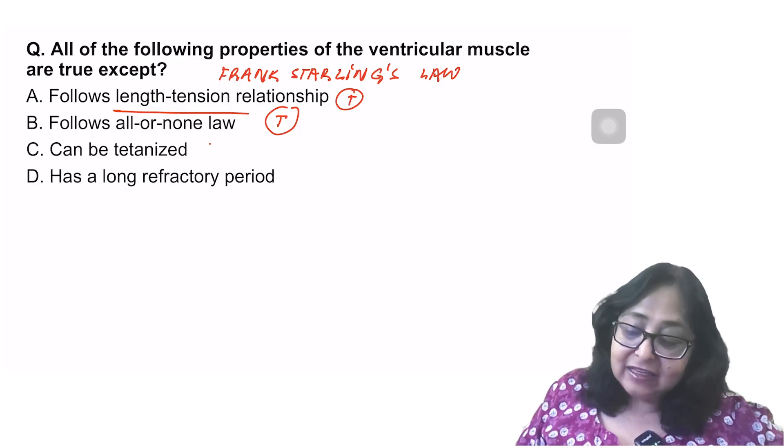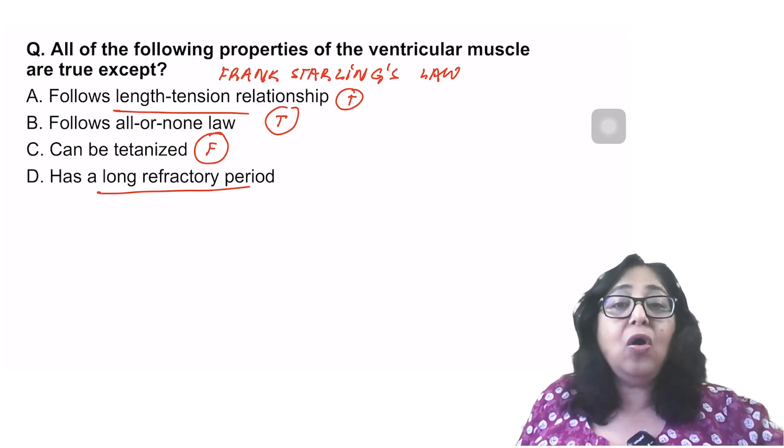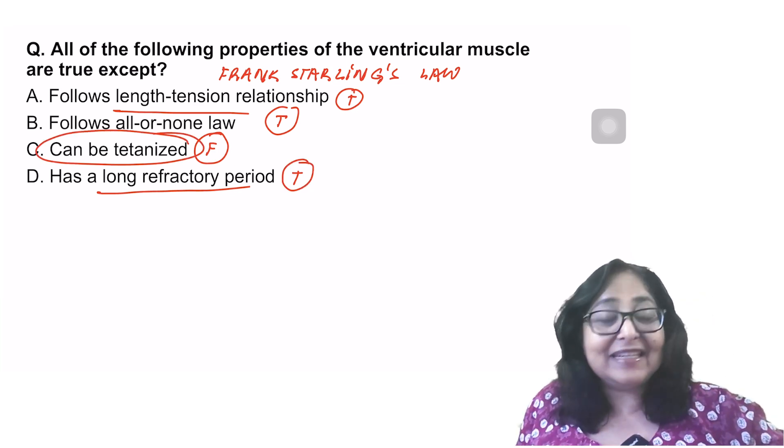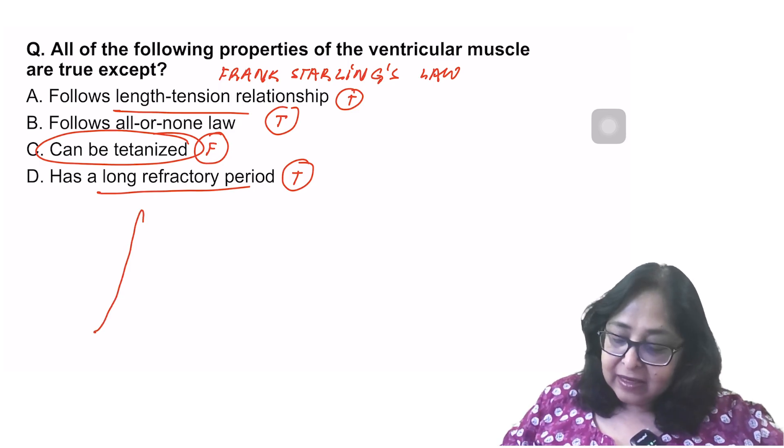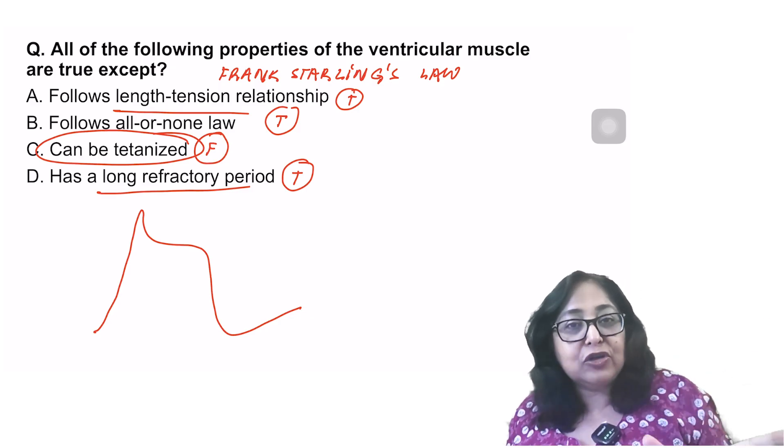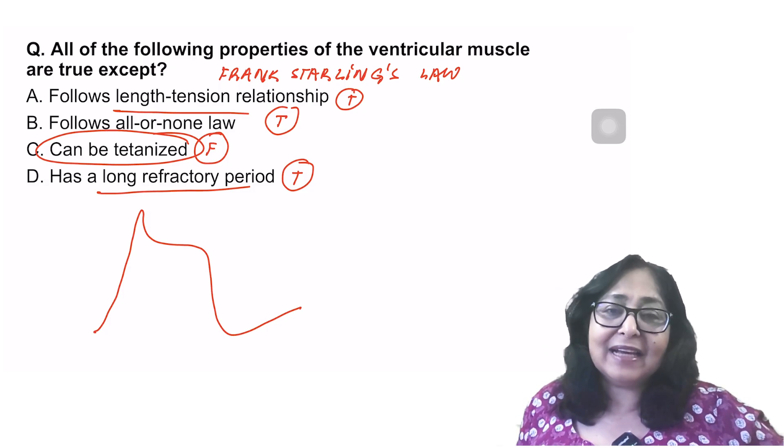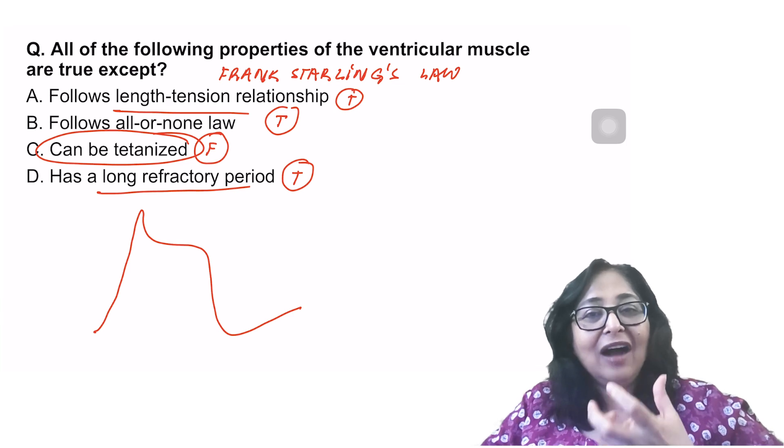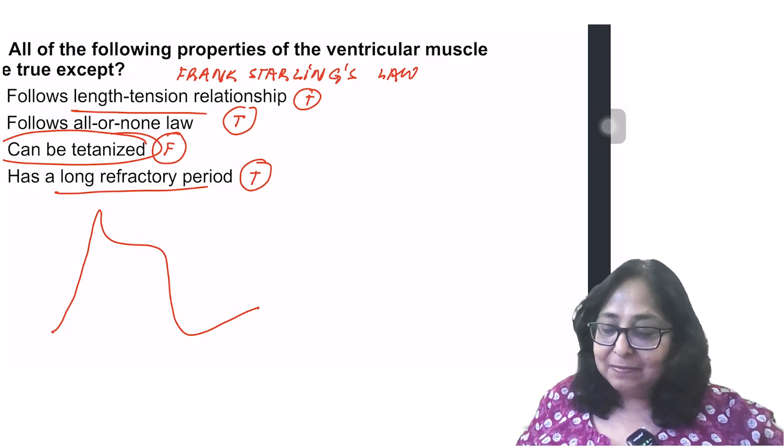Can be tetanized. This is false. Cardiac muscle cannot be tetanized. Why it cannot be tetanized? Because it has a long refractory period. So this is true. Answer here becomes, can be tetanized. It cannot be tetanized. Why can it not be tetanized? Because it has a long refractory period. If you remember the plateau potential. Because of the plateau phase, the total duration of action potential and the duration of refractory period has increased. Therefore, the cardiac muscle cannot be tetanized, which makes a lot of sense. Because in the heart, I want systole, diastole, systole, diastole. If heart goes into a sustained systole, sustained contraction, kahani khatam, isn't it? So heart muscle cannot be tetanized.